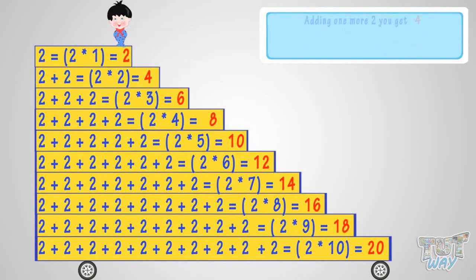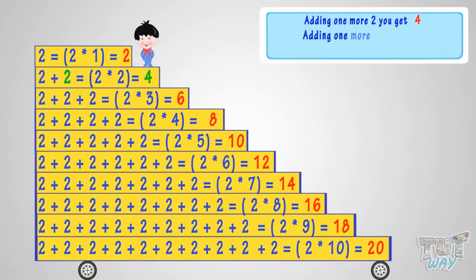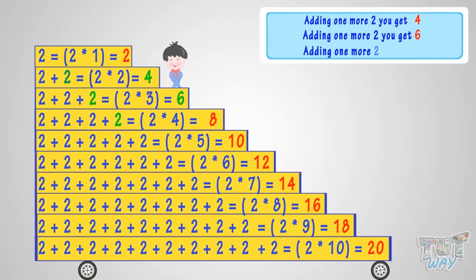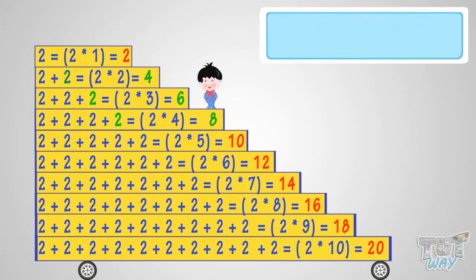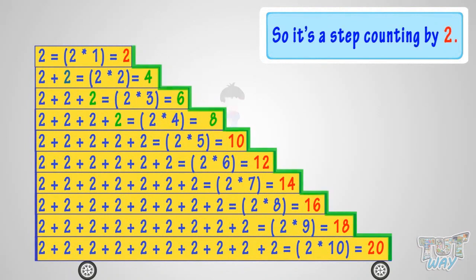Adding one more two, you get four. Adding one more two, you get six. Adding one more two, you get eight, and so on. So it's step counting by two.